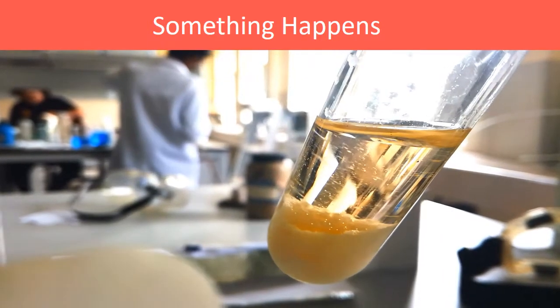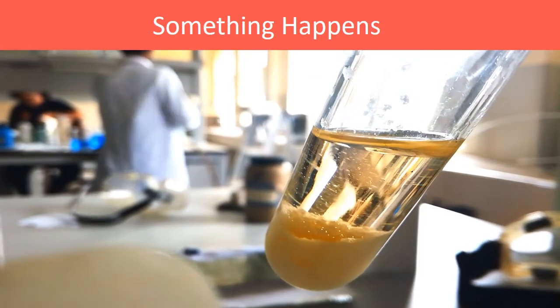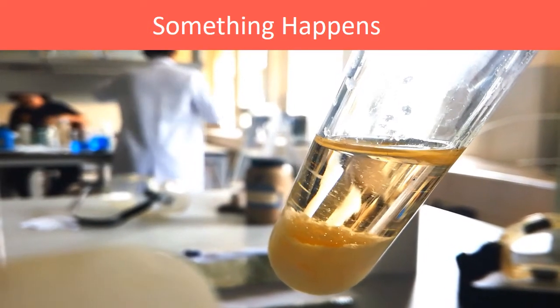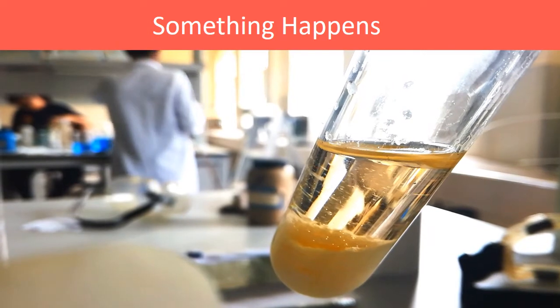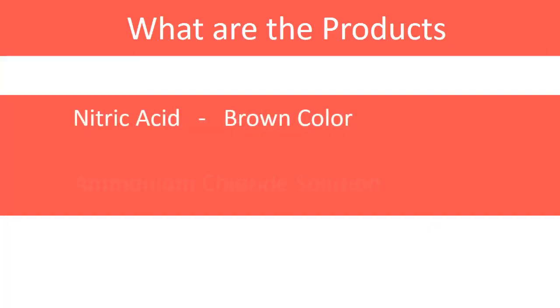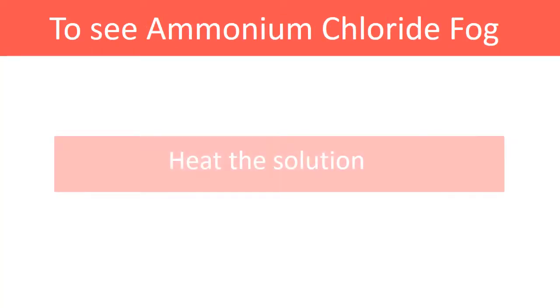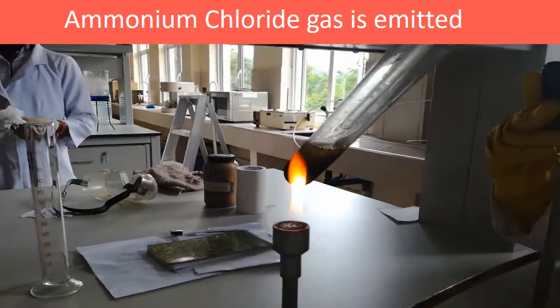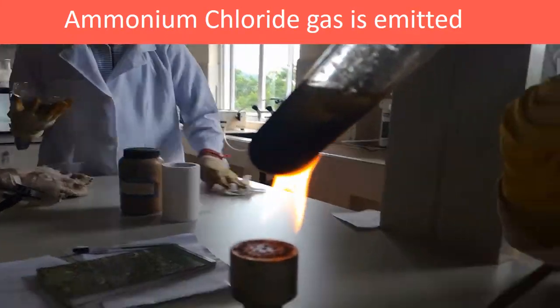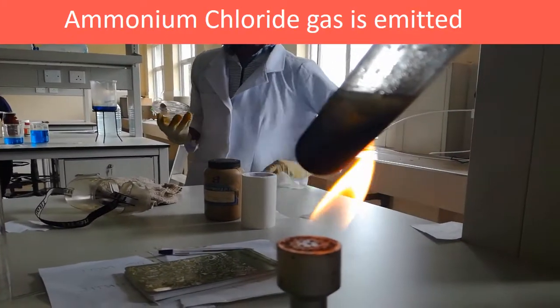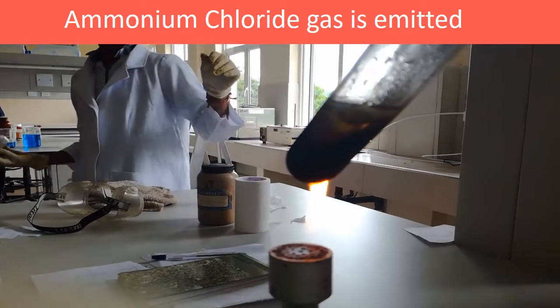After reaction with hydrochloric acid and ammonium nitrate, we can see nitric acid is produced with brown color. And also, through the liquid and test tube, a little bit of fog is going in the upward direction.